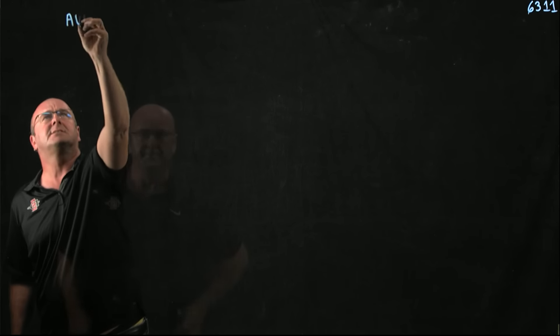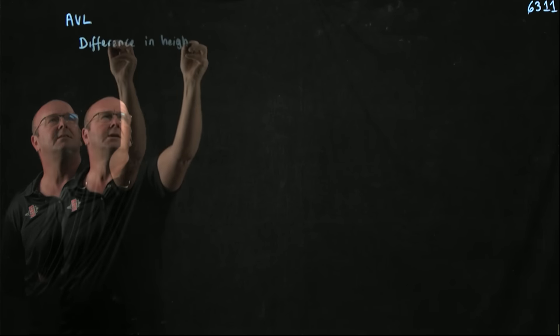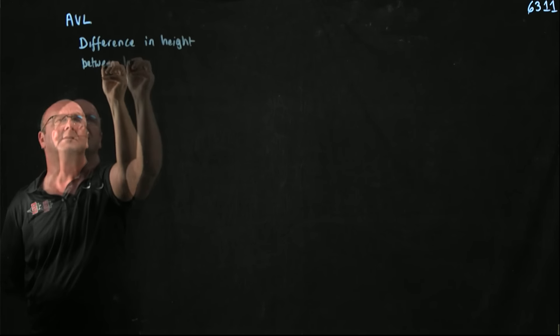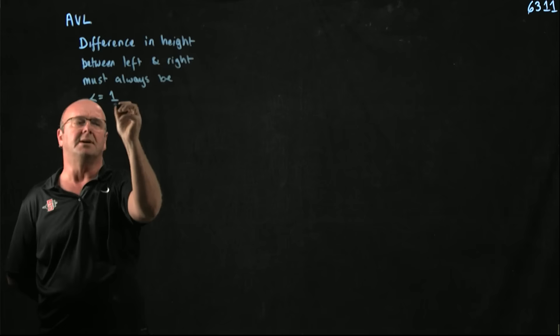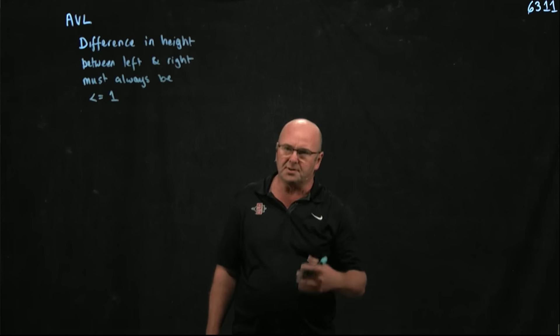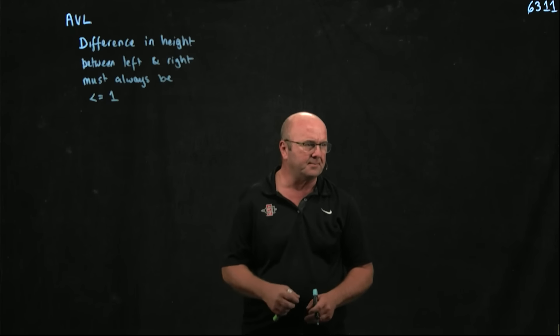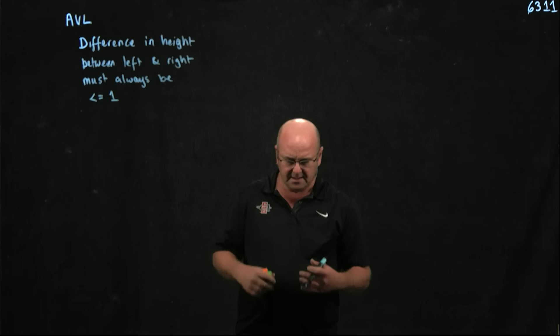So I've talked about trees being imbalanced, but I haven't really described what an imbalanced tree actually means. One of the trees we're going to look at are called AVL trees. The rule for an AVL tree is that the difference in height between left and right must always be less than or equal to one. And if the difference in height is more than one, then there's a violation of the tree. Let me demonstrate an AVL tree and show you what I mean.